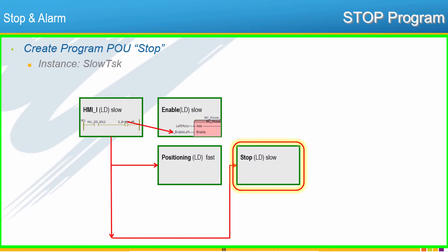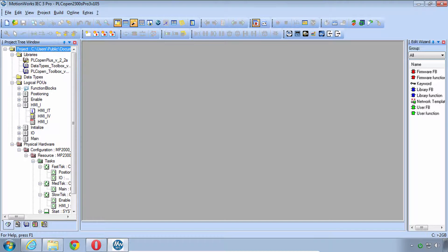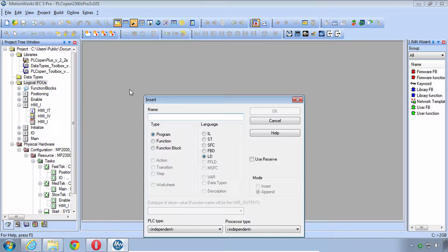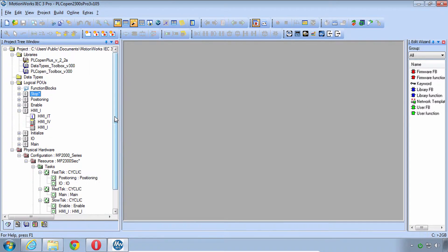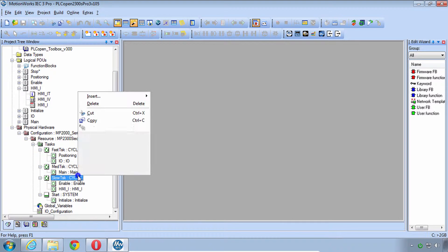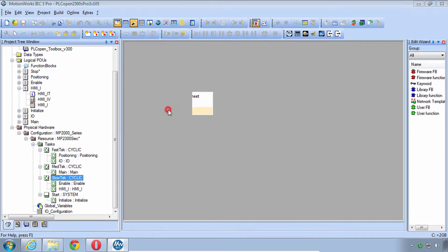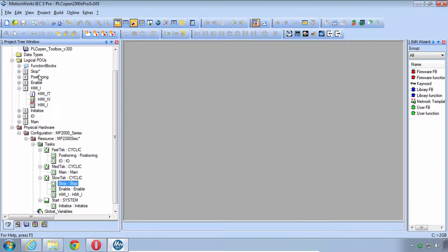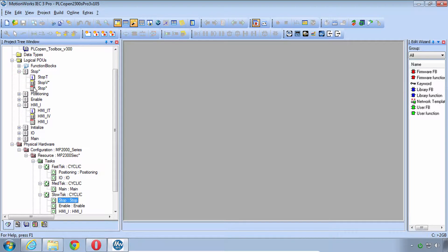Here's the program map as we're progressing and it's time to add the program POU called Stop into the Slow Task of our project. You can work along with me here. We'll just right-click, insert a program called Stop. We've got Ladder Diagram Language. We said we'd run it in the Slow Task. So right down here, insert Program Instance Stop. And let's open that Stop program.